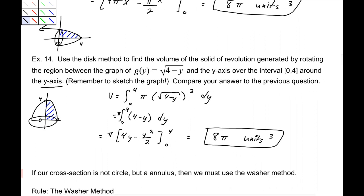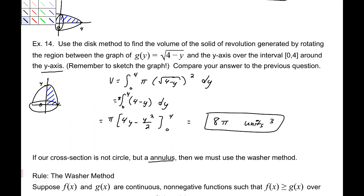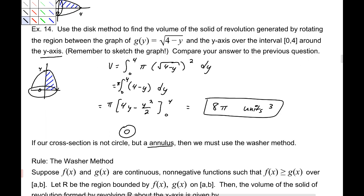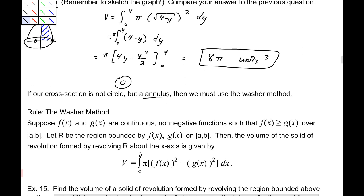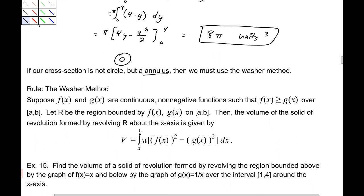What if our cross-section is not a circle, but an annulus? An annulus is a disk with a cutout — a donut, if you like. Then we have to use something called the washer method. Suppose f(x) and g(x) are continuous non-negative functions where f(x) ≥ g(x) over the interval [a, b]. The volume of the solid formed by revolving the region between them about the x-axis is V = ∫ from a to b of π·[outer radius² − inner radius²] dx.